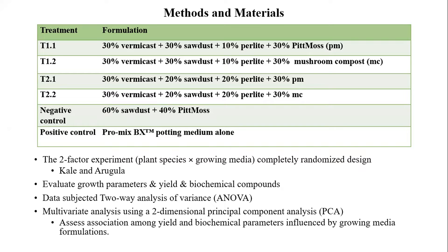Today I'm talking about the effect of growing media on kale and arugula. I used different natural amendments and combinations of them, including vermicast, coco coir, perlite, peat moss, and mushroom compost. Peat moss in treatments 1.1 and 2.1 was replaced with mushroom compost to compare the effect on crop yield and quality. The negative control is a combination of coco coir and peat moss, and the positive control is just pro-mix. All data were subjected to two-way ANOVA analysis and principal component analysis. PCA was used to find the association between yield, chemical parameters, and growing media.